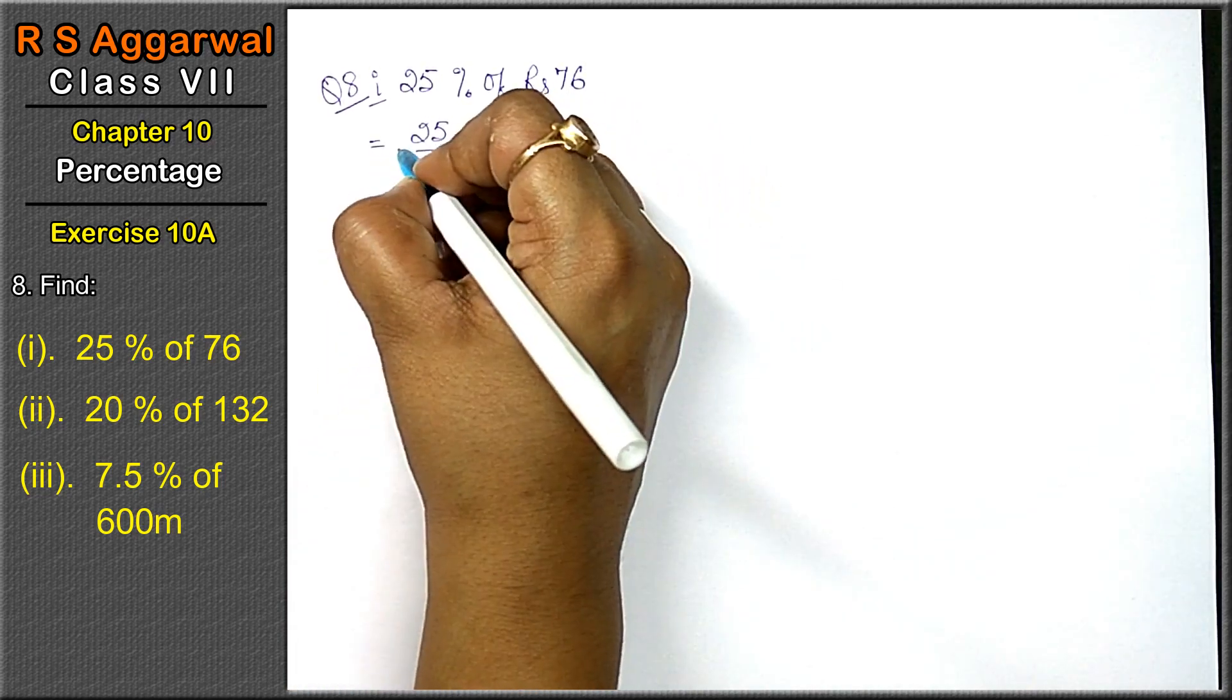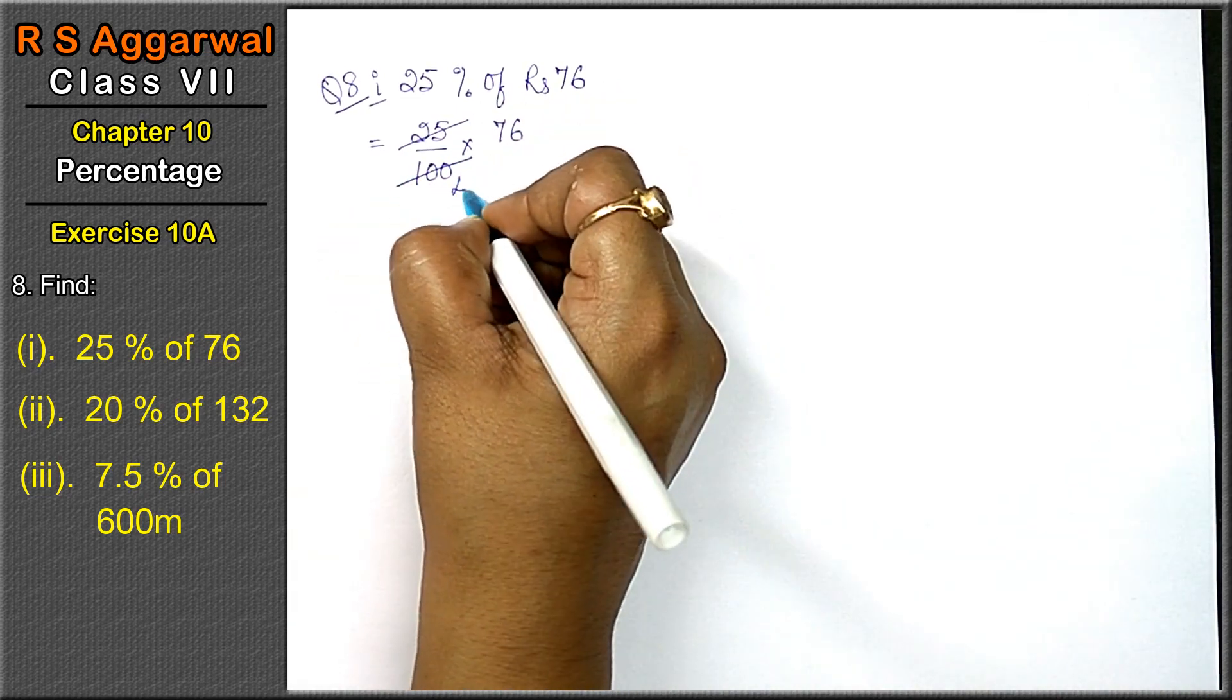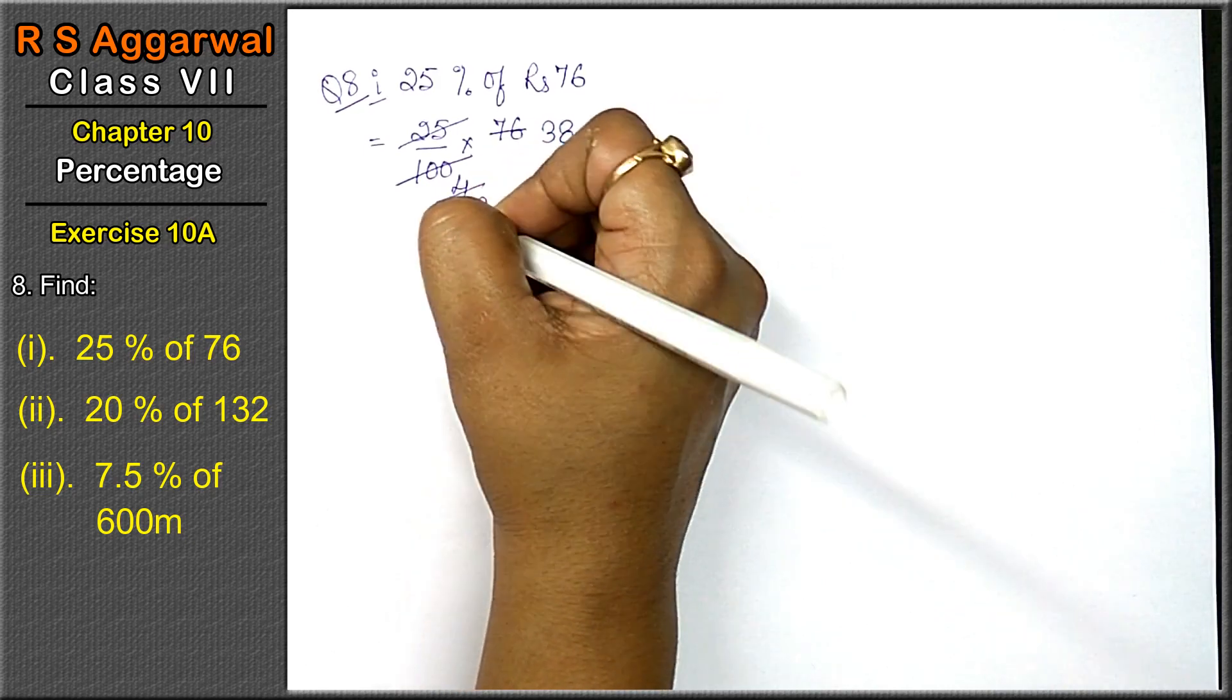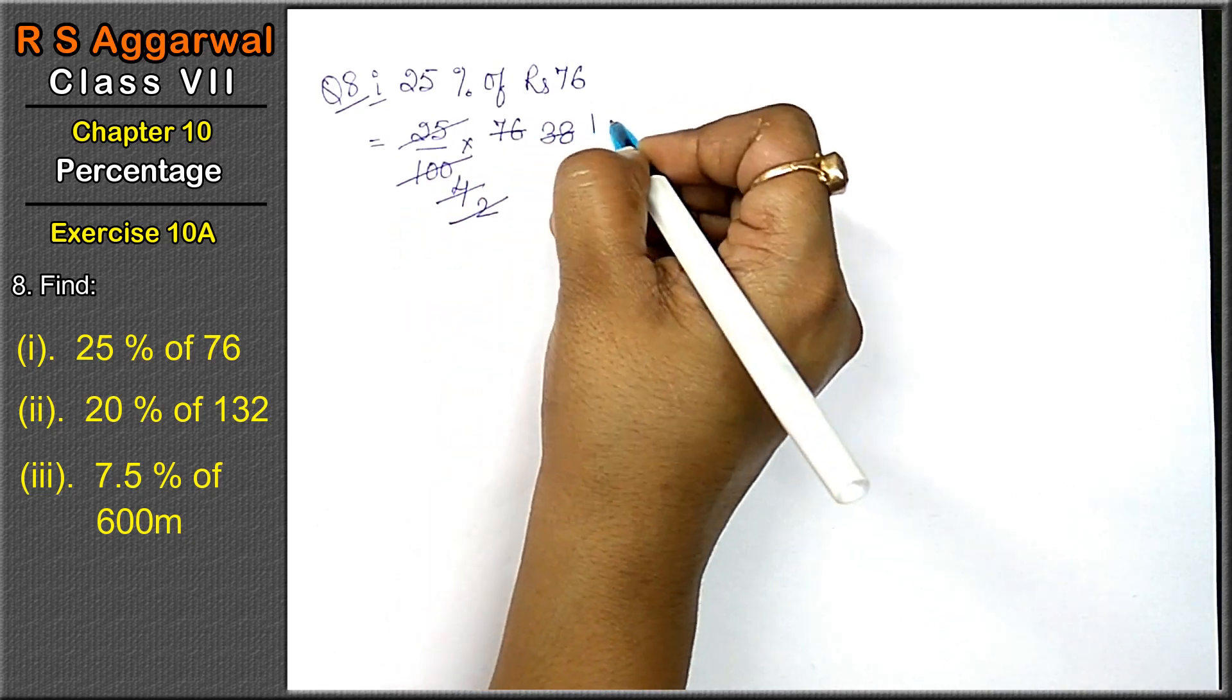76. Now 25 ones are 25, 25 fours is 100. 2 twos are 4, 2 threes are 6, 2 eights are 16, 2 ones are 2, 2 ones are 2, 2 nines are 18. 19 is the answer.